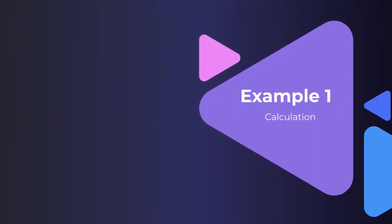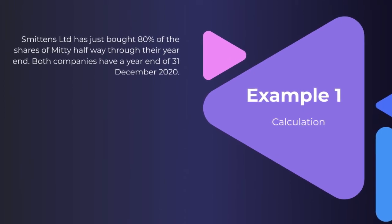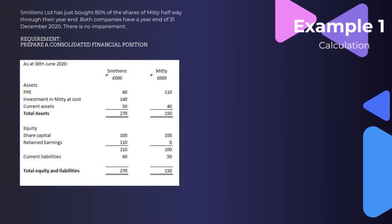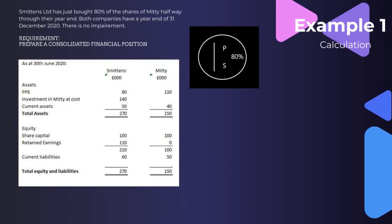Now let's have a look at two examples. In example one, Smittons Limited has just bought 80% of the shares of Mitty halfway through their year end. Both companies have a year end of 31st December 2020, and we've been asked to prepare a consolidated statement of financial position. The first thing we're going to do is prepare a percentage ownership and control calculation — the parent owns 80% of the subsidiary, so they definitely have control. At the 30th of June when Smittons took control, Mitty had PPE of 110k, current assets of 40k, total assets of 150k, share capital of 100k, no retained earnings, and current liabilities of 50k.